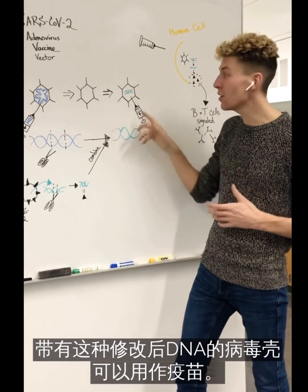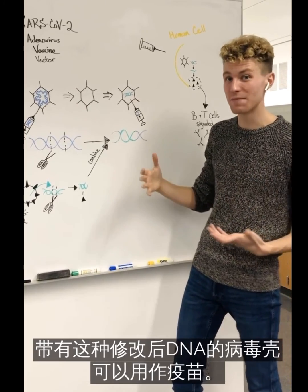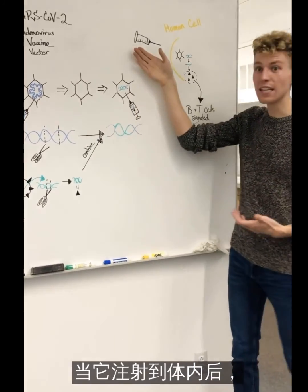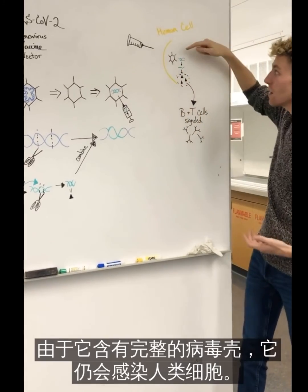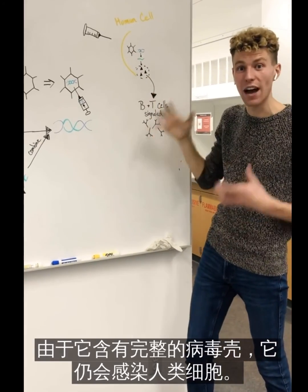Now, this viral shell with this modified DNA can then be used as a vaccine. When it's used as a vaccine and administered, it will still infect a human cell because of that intact viral shell.